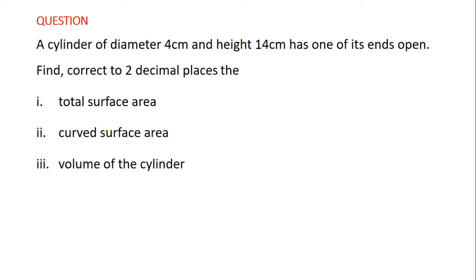Let's consider this question: a cylinder of diameter 4 centimeters and height 14 centimeters has one of its ends open. Find, correct to two decimal places, the total surface area, curved surface area, and volume of the cylinder. So for this cylinder, one end is open and the other end is closed.